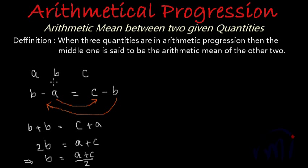So if this B is the arithmetic mean of A and C, then the value of B will be equal to A plus C by 2. So whenever you are asked to find the arithmetic mean of two numbers, you just have to find their average.